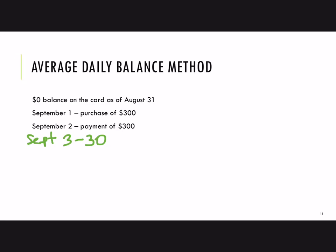The average daily balance method is just finding an average. Think about previous experience you've had calculating averages. Let's say you have test scores of 80, 70, and 90. How do you find your average? You add those three up and divide by the total number of things you're averaging — in this case, 3.